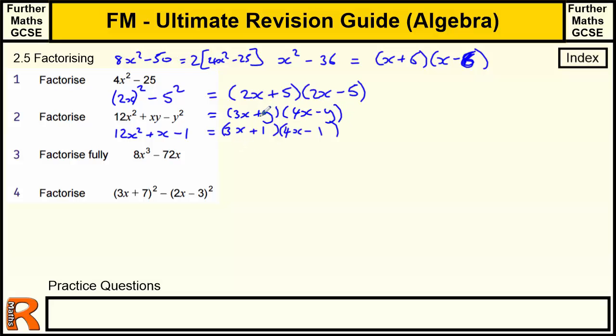We can look through how that works. We've got y times minus y is minus y². Then we've got 4xy minus 3xy, which is just xy. And 3x times 4x is 12x². That can be quite a useful technique, replacing one of the letters with a number.